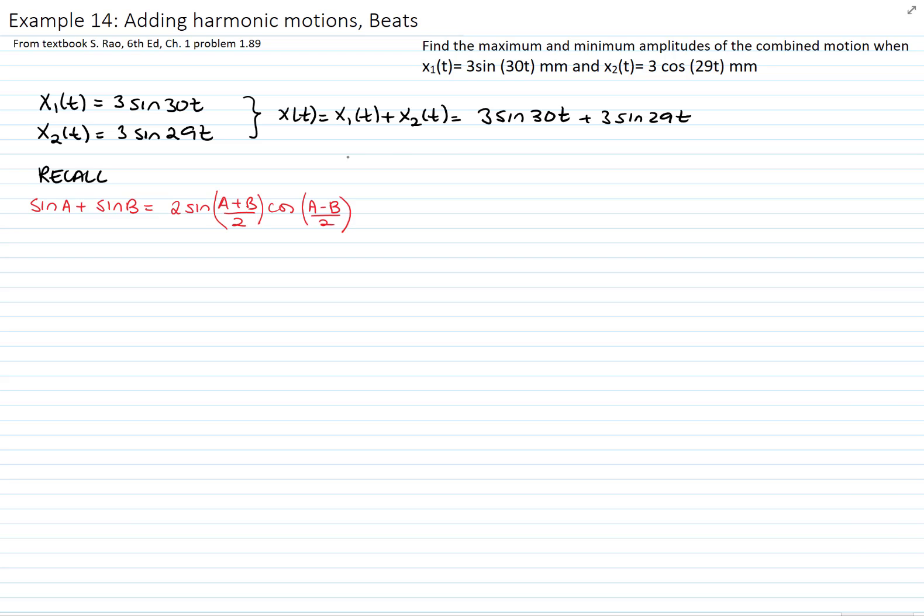then we plug those numbers and get the result of that. This is 2 times 3 sin(59/2) times cos(t/2).